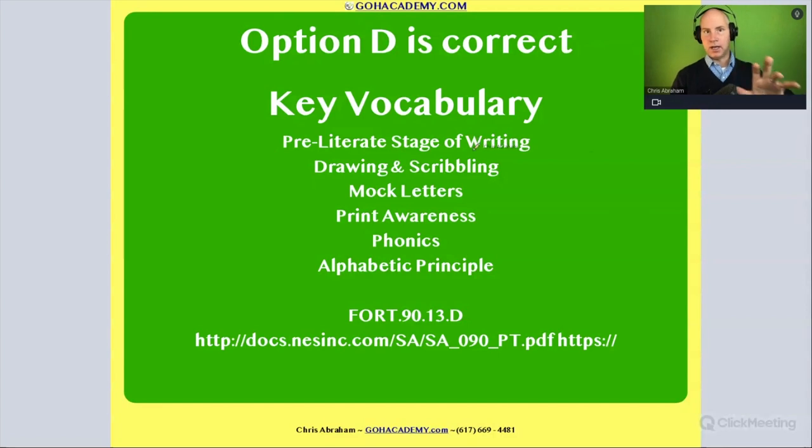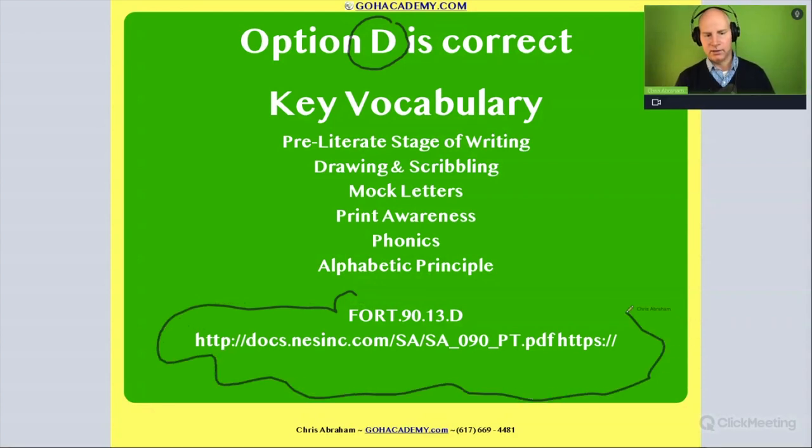Let's go check out the answers here. It says the answer is D, it's from this practice test here. So that was a good practice test, right? And we get this preliterate stage of writing case study. We have to remember that these are the ideas that go with that stage: drawing and scribbles and mock letters. We're going to know that this is indicating some awareness of print in that they are demonstrating the awareness of print here. It's not about phonics, it's not about the alphabetical principle. Lots of great review here. Let's go to our next question.